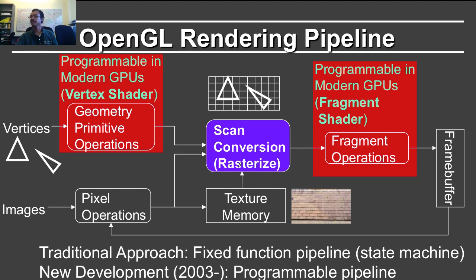The geometry primitive operations act on the vertices, but once you've got the vertices on the screen, you still need to decide which pixels they correspond to. That operation is known as scan conversion or rasterization, and essentially OpenGL is a scan converter or rasterizer. If this course were being taught 10 or 20 years ago, one of your crucial assignments would be to write a rasterizer. But nowadays it's a basic component of the OpenGL hardware, so we can consider more interesting concepts in this course.